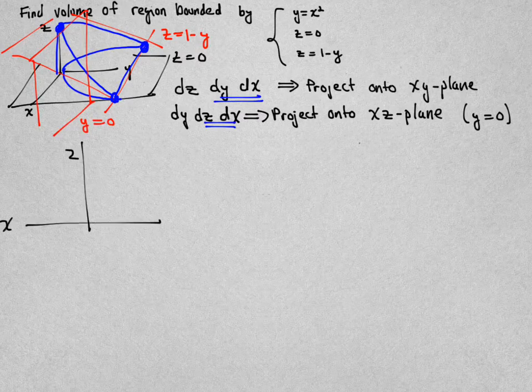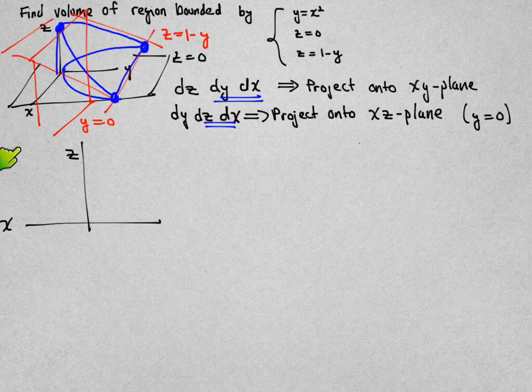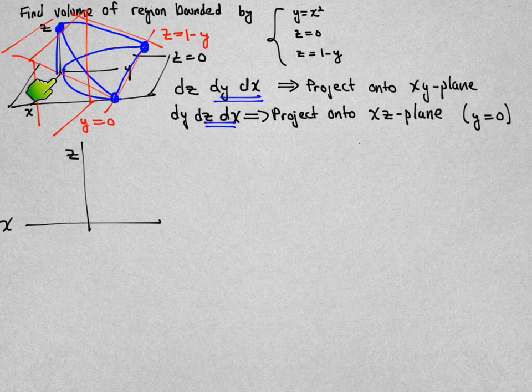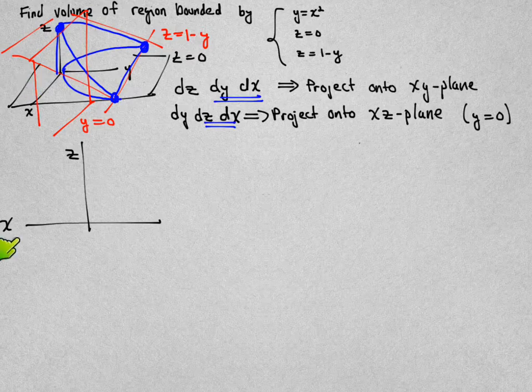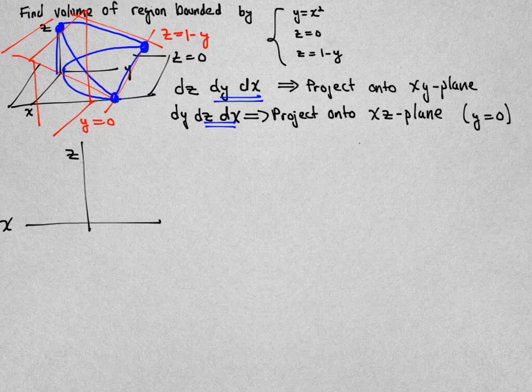So when I project onto the xz-plane I'm setting y equal to zero and that means all the points parallel to the x and z-axis containing the x and z-axis and that's this red plane here. We're going to project all the points in my blue region back onto that plane where y is equal to zero and we'll draw that picture here with the x-axis and the z-axis in two dimensions below.